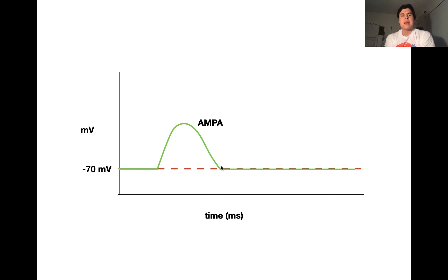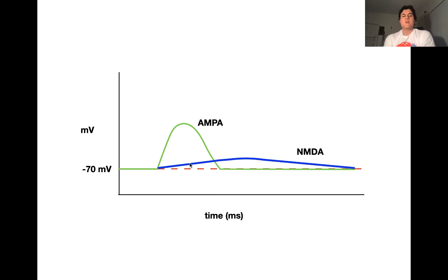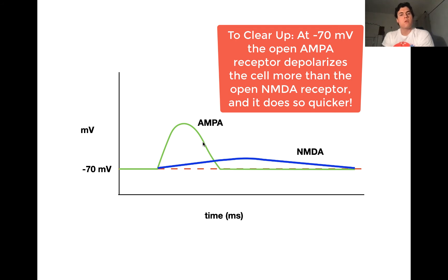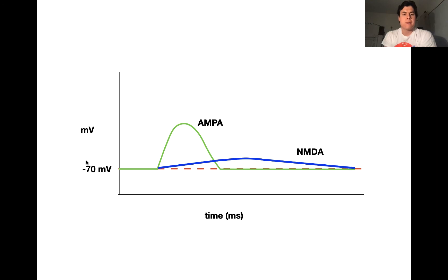What would we expect for the NMDA receptor? The blue line shows the NMDA receptor when it opens. The first thing to note is that the NMDA receptor opens more slowly than the AMPA receptor. The second thing is that the NMDA receptor also causes a depolarization at this membrane potential; however, the relative contribution to the membrane potential is less — the NMDA receptor depolarizes the cell less than the AMPA receptor at this particular membrane potential.